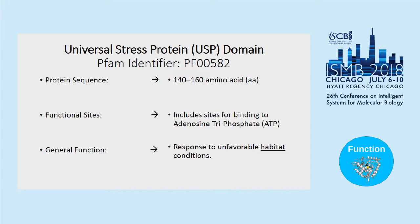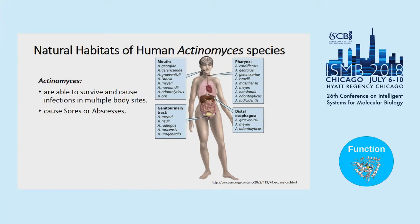I'd first like to brief you all on universal stress proteins. The protein family is able to assist various organisms like actinomyces in surviving in unfavorable conditions — for example, extreme temperatures. Actinomyces is able to survive in multiple sites of the body.